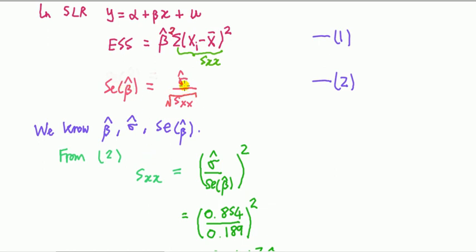So from equation two, we can back out the corrected sum of squares of X, and then we can substitute that into one, because we know both beta hat and this, to get the ESS. So that's the thing we're going to do.